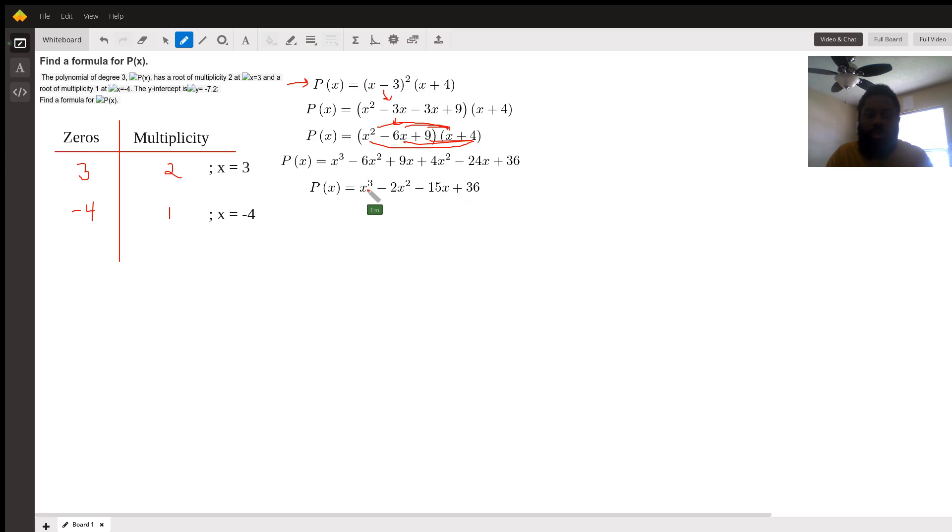Then we bring down x cubed, because that's the only term. Then we add like terms: negative 6x squared plus 4x squared is negative 2x squared, plus 9x minus 24x is negative 15x, and bring down the plus 36.